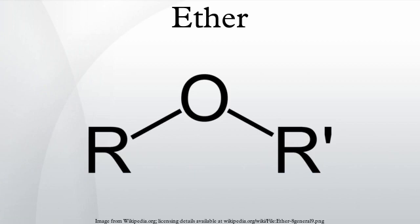Physical properties: ether molecules cannot form hydrogen bonds with each other, resulting in relatively low boiling points compared to those of the analogous alcohols. The difference in boiling points of ethers and their isomeric alcohols becomes smaller as the carbon chains become longer, as van der Waals interactions of the extended carbon chain dominate over hydrogen bonding. Ethers are slightly polar; the C-O-C bond angle in the functional group is about 110 degrees, and the C-O dipoles do not cancel out. Ethers are more polar than alkanes but not as polar as alcohols, esters, or amides of comparable structure.